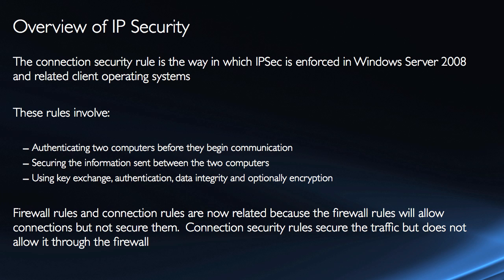The primary component to understand when dealing with IPsec in Server 2008 is a connection security rule. This is the way in which IPsec is enforced on Server 2008, Windows Vista, and Windows 7. These rules involve authenticating two computers before they begin a communication. We perform that authentication using a variety of methods: Kerberos, NT LAN Manager, certificates, or a pre-shared key. We have to have mutual authentication prior to communicating. Then a security association is set up based on the connection security rule so that we can secure the information sent between the two computers, using key exchange, authentication, data integrity, and optionally encryption.